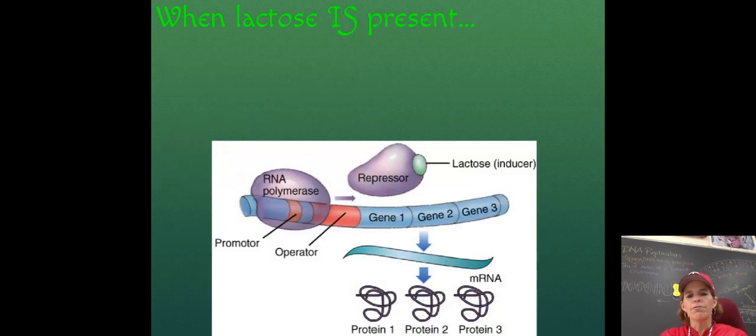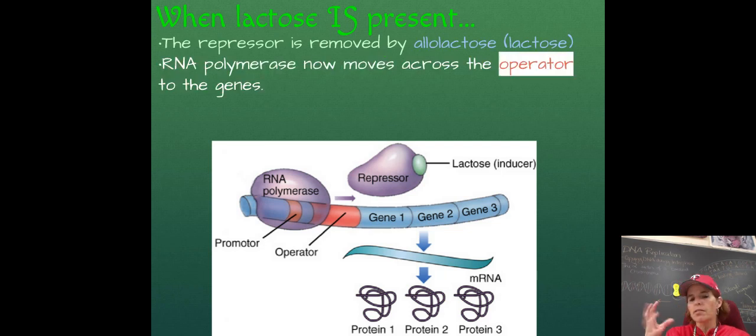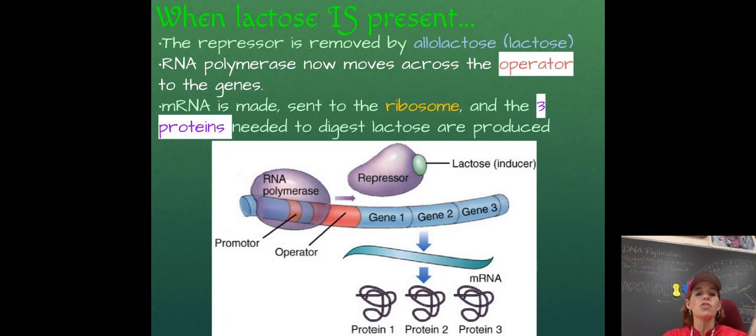However, if lactose is present, if I take those E. coli and I drop them in a bowl of milk, lactose, do you see the little inducer molecule that's attached to the repressor? That inducer attaches to the repressor and causes the repressor to change shape. It falls off. The purple RNA polymerase can now move across the genes, and it can read gene one, gene two, and gene three. Now, this diagram jumps a bunch of critical steps, but that's okay. They're just trying to condense the idea here.